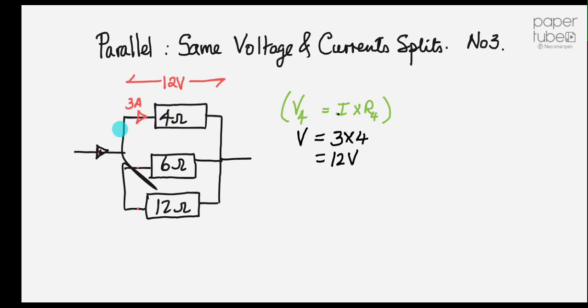Being in parallel they all have the same voltage. So if there's 12 volts across that, there's 12 volts across that, and there's finally, guess what? There's 12 volts across that. Now, so there's 12 volts across the 6 ohm and the 12 ohm. Fair enough.